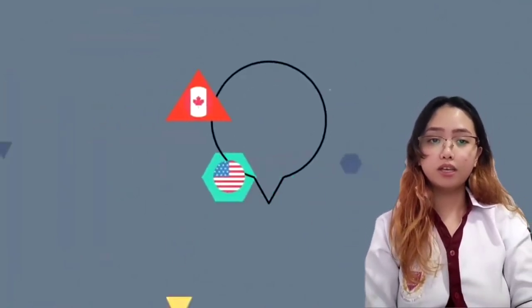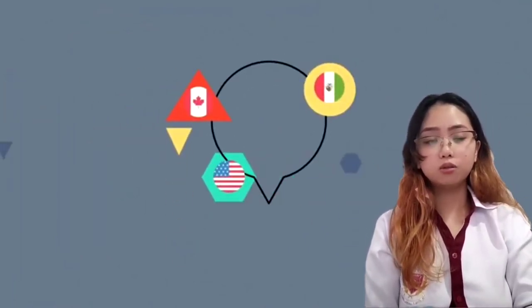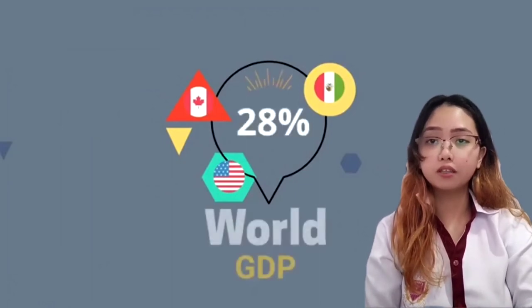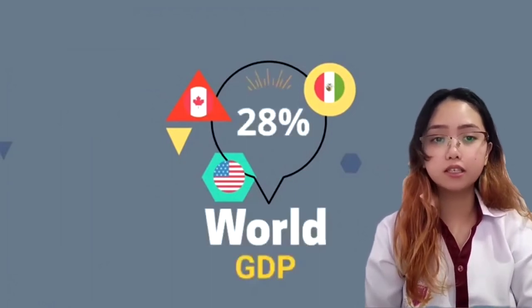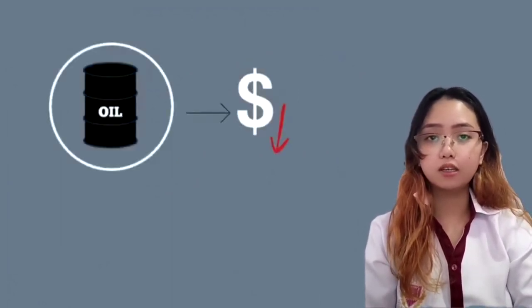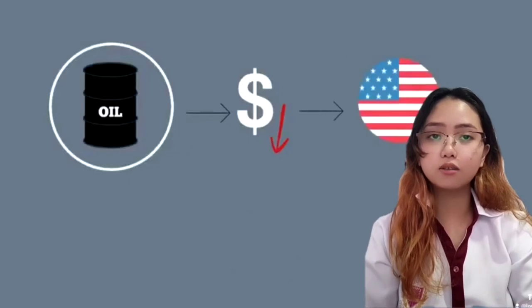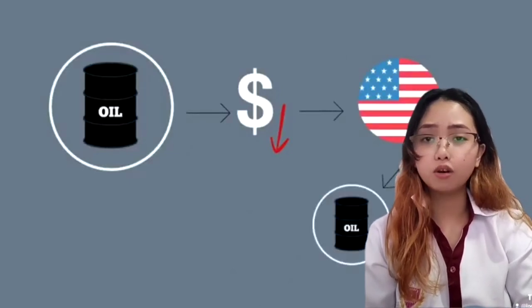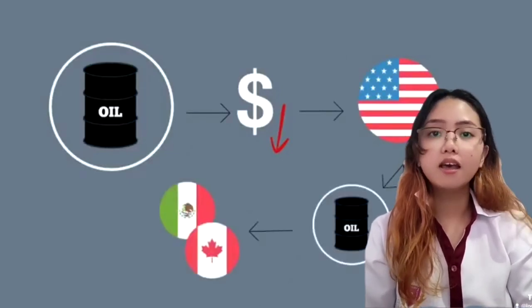With only 7% of the world's population, Canada, the US, and Mexico together generate 28% of the world's GDP. Oil prices went down because the United States could now import much of its oil from Mexico and Canada.